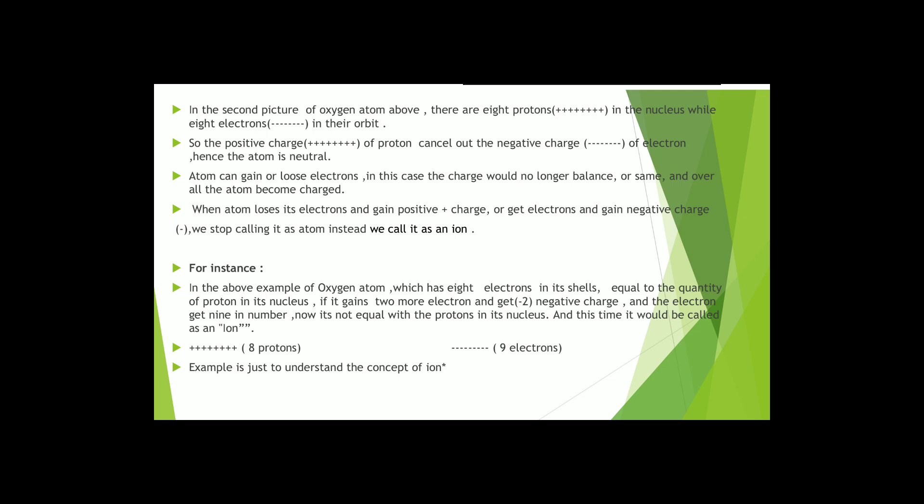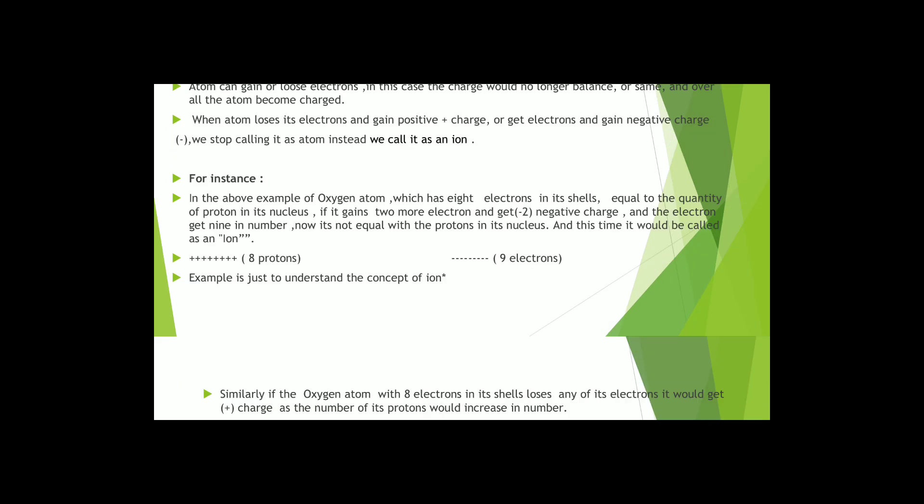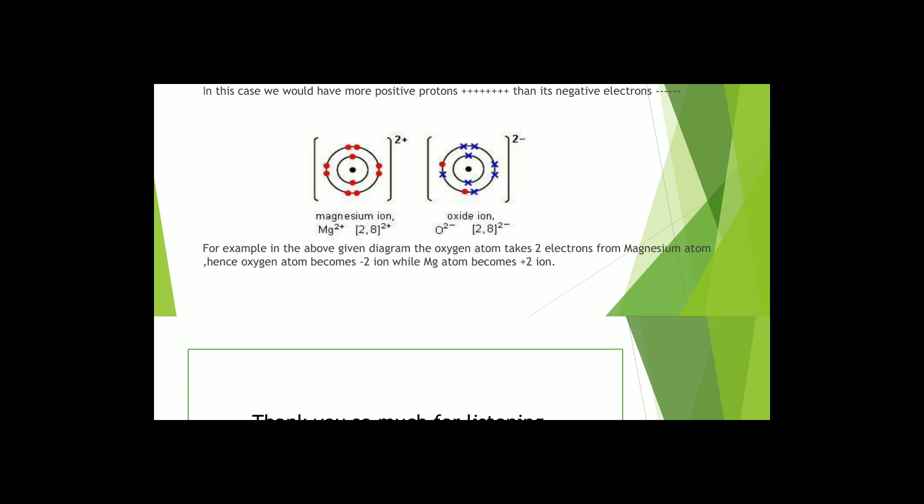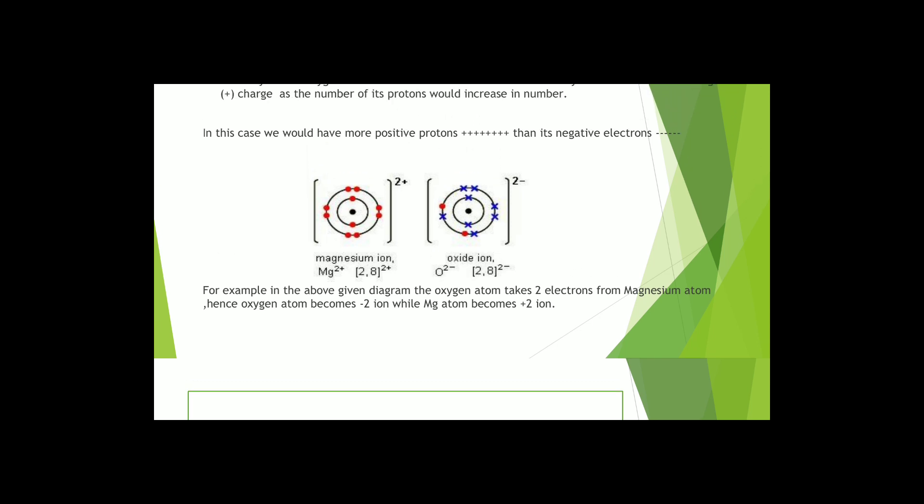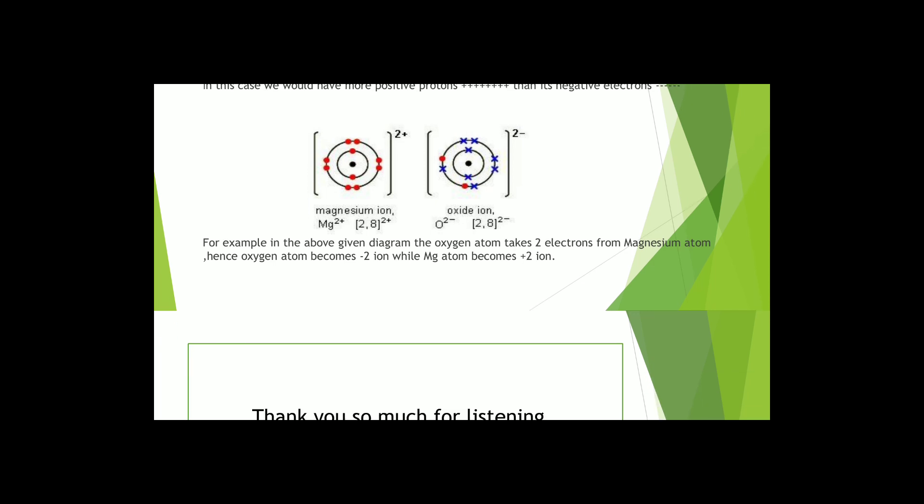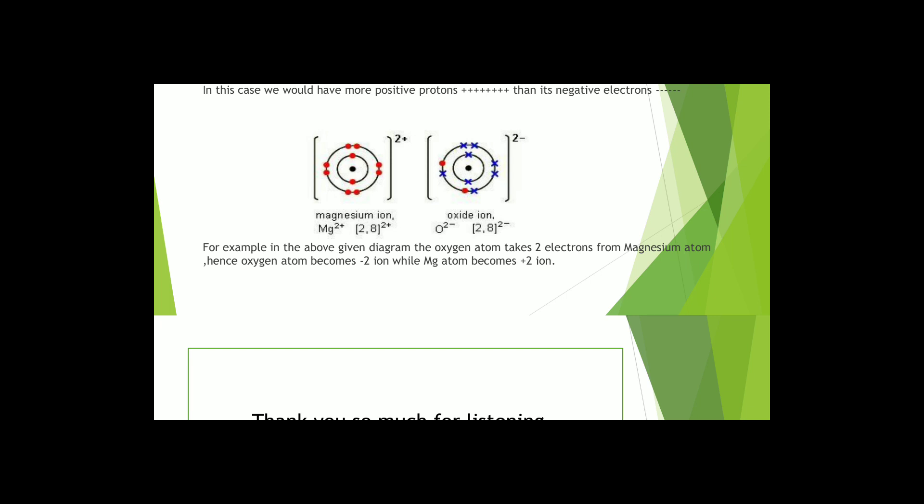Similarly, if the oxygen atom with 8 electrons in its shell loses any of its electron, it would get positive charge as the number of its protons would increase in proportion. In this case, we would have more positive protons than negative electrons. In this given diagram, oxygen atom takes 2 electrons from magnesium atom and becomes minus 2 ion, while magnesium atom loses its 2 electrons and becomes positive 2 ion.